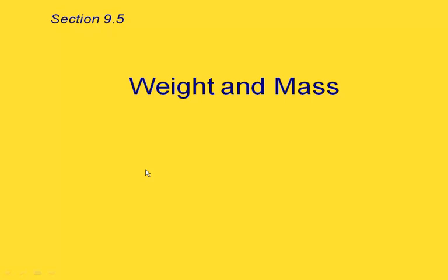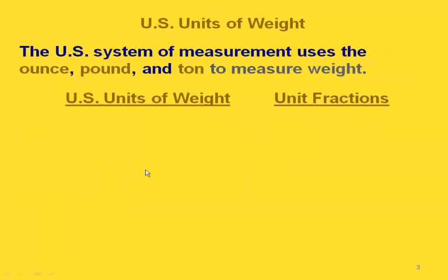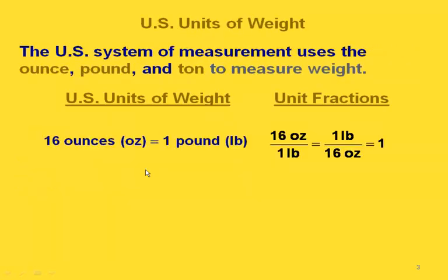This is section 9.5 on weight and mass. When we're measuring weight, we're talking about how heavy an object is. When we discuss weight, we're referring to things like a 12-ounce box of cereal, an overweight 19-pound tabby cat, or a barge hauling 24 tons of garbage. The U.S. system of measurement uses the ounce, the pound, and the ton to measure weight. Here are some U.S. units of weight.